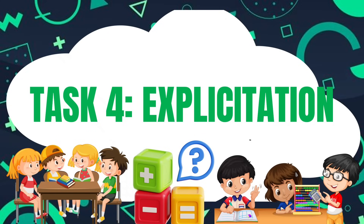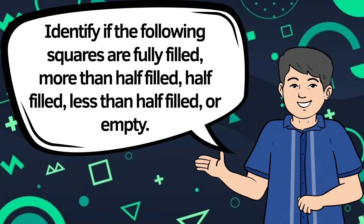So let's have the explicitation. Kindly identify the following squares — whether these squares are fully filled, more than half filled, half filled, less than half filled, or empty. You're going to describe the following squares based on the shaded areas. Kindly observe the following squares and later on let's answer.